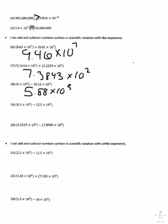Number nineteen, the exponents are the same, so you can subtract 0.3 minus 2.5, and you get negative 2.2 times 10 to the 5th.